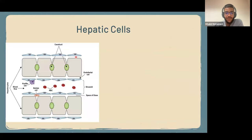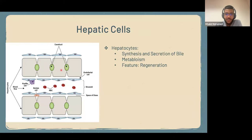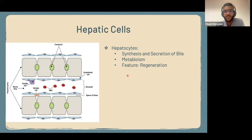Now let's talk about different types of cells in the liver. First, we have hepatocytes, the most obvious ones. These cells are responsible mainly for all types of metabolism — detoxification, glucose formation, glycogen formation — and also for the secretion of bile as discussed in the previous lecture. A notable feature of hepatocytes is their very high ability to regenerate. If you take out 75% of the liver, it has the ability to regenerate fully.